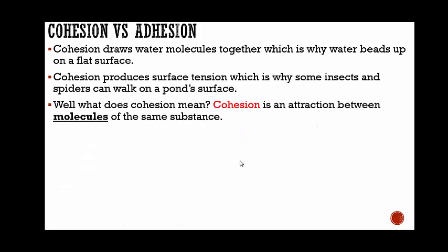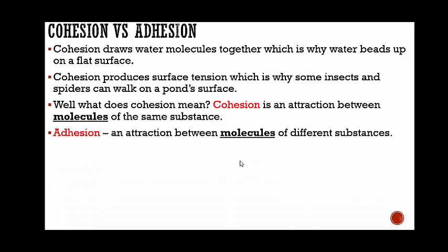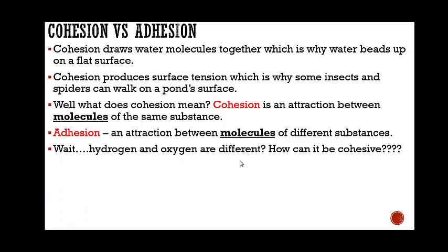Cohesion is an attraction between molecules of the same substance. Water being attracted to water is a prime example. Then you have adhesion, an attraction between molecules of different substances. Now you might be saying, hold on, hydrogen and oxygen, they're different. So how can it be cohesive? Shouldn't it be adhesive?